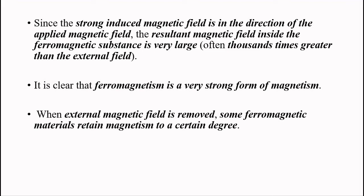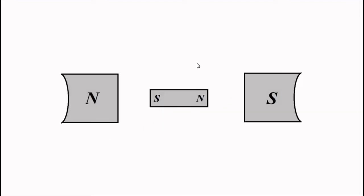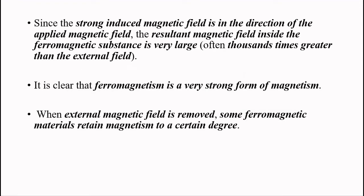The resultant field inside a ferromagnetic material is greater than the external field — in paramagnetic it was less, but in ferromagnetic it is more, again the magnified version. Ferromagnetism is a very strong form of magnetism, and it retains its characteristics even when the external field is removed. In the case of paramagnetic and diamagnetic materials, they lose their magnetic behavior the moment the external field is removed, but ferromagnetic materials retain their attractive magnetic characteristics to a certain degree even after the field is removed.